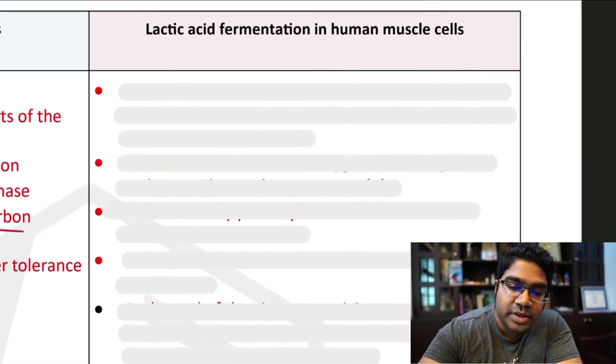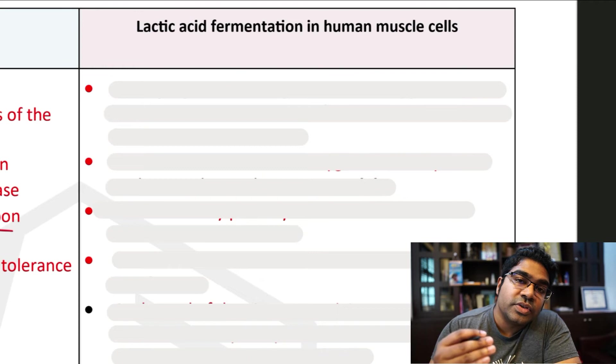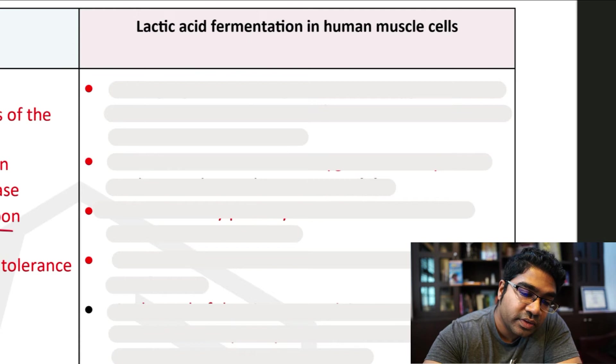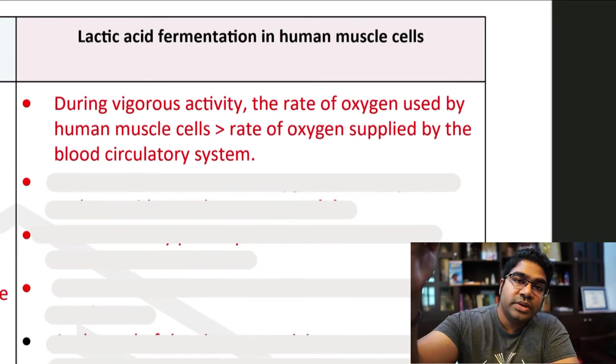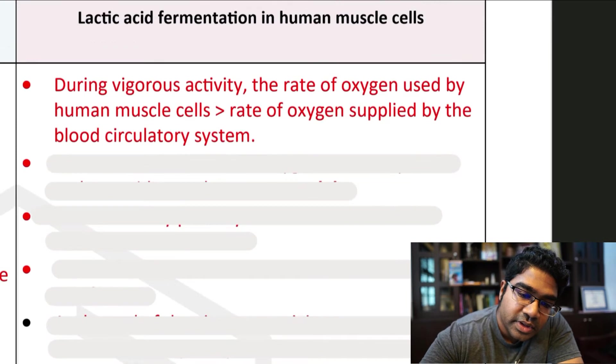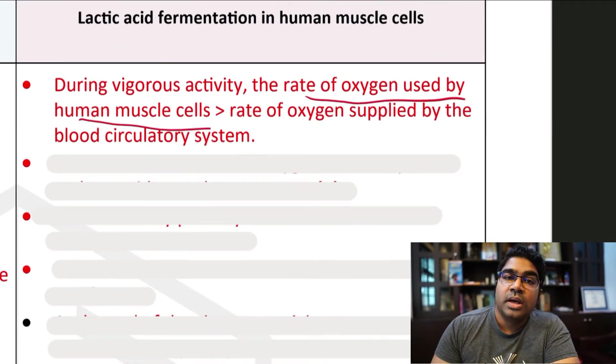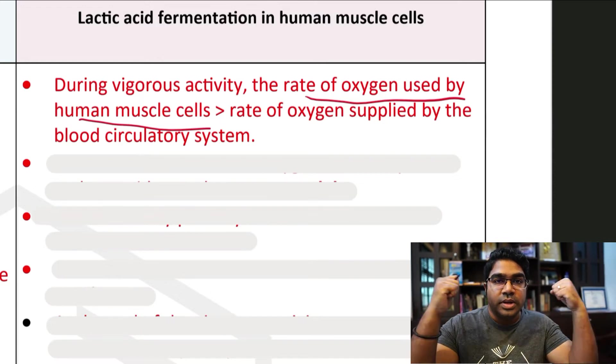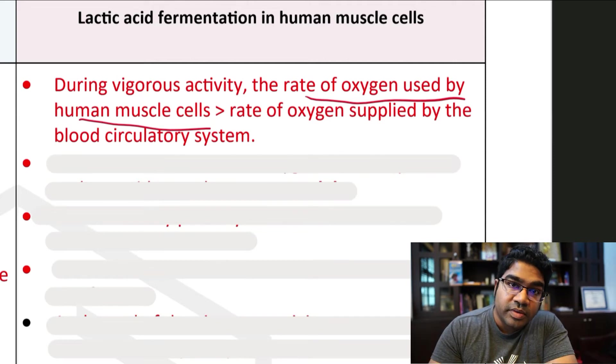Let's look at lactic acid fermentation in human cells. The condition where we have a lack of oxygen or a limited supply of oxygen is usually during vigorous activity, whatever that activity may be. It could be a sprint. And during vigorous activity, the rate of oxygen used by the muscle cells increases because every time a muscle contracts, we need to use oxygen to generate the energy for that contraction in aerobic respiration.